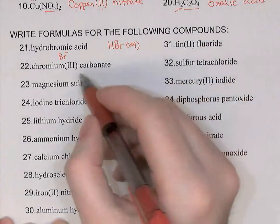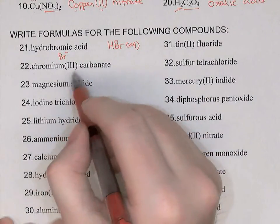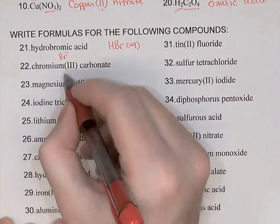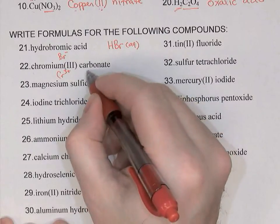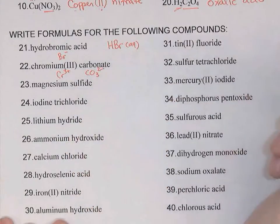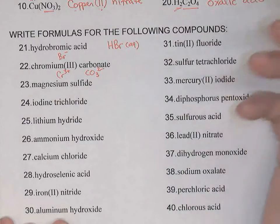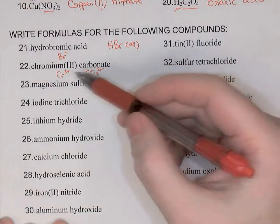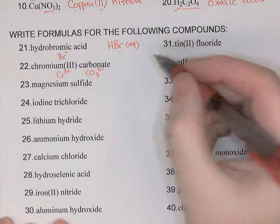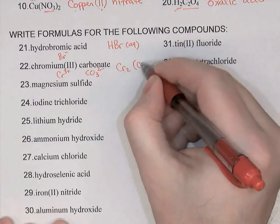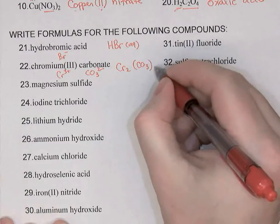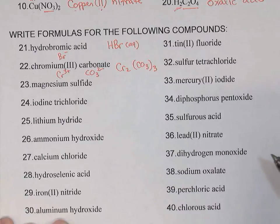Chromium(III) carbonate: this is an ionic compound — a metal with a Roman numeral telling me its charge. So this was chromium 3+. And carbonate is a complex ion: CO3²⁻. Since chromium is 3+ and carbonate is 2-, to cancel the charges I need 2 chromiums and 3 carbonates. So Cr2, and complex ions when we have more than one are put in brackets with the subscript outside: Cr2(CO3)3.